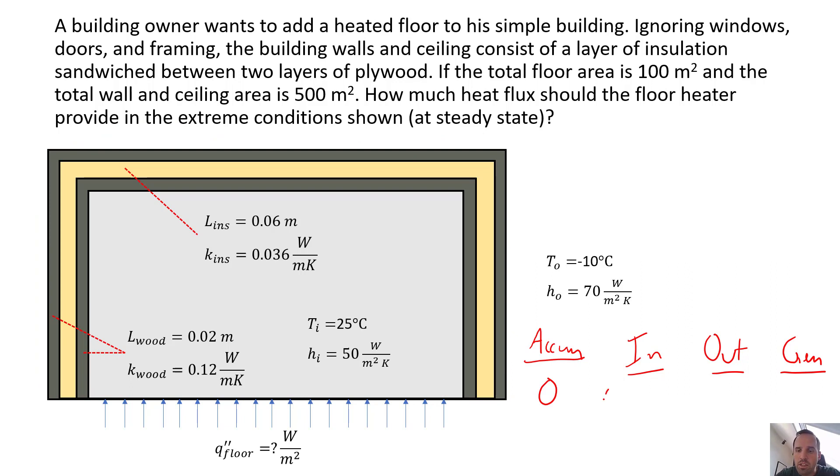So that in term would be, since we're given a flux, we're asked to find the flux, we'd have Q floor times the area of the floor. Okay, and let's just say there's zero generation since we treated the heated floor as an in.